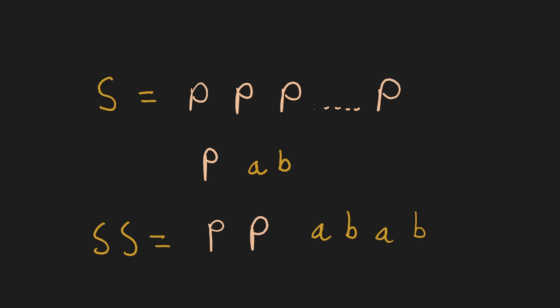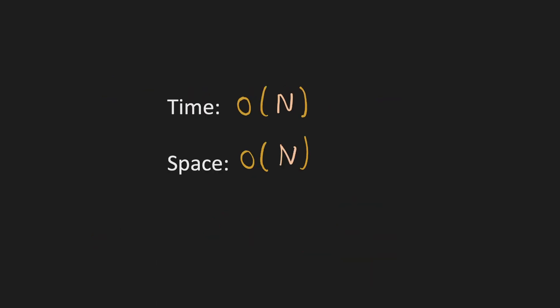Now let's check the scenario when the repeating pattern is the string itself. In that case the pattern will be repeated only once, and if we remove the first and the last character of the resultant string, we won't be able to find the original string in it. Hence this method works for both the negative and positive scenarios. The time complexity is O(n) because we have to search our original string in the resultant string, and the space complexity is also O(n) because we store the concatenated string of length 2n.